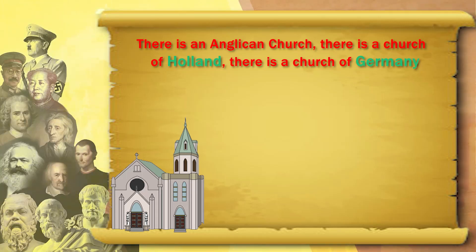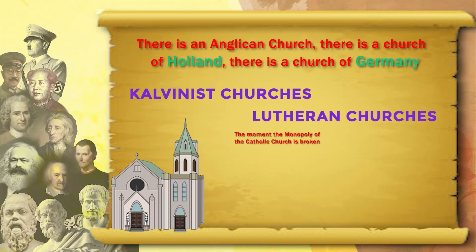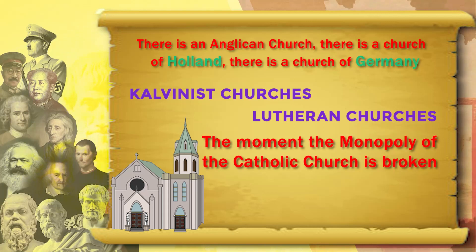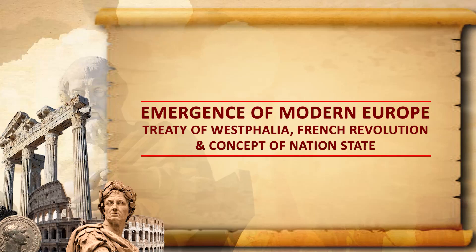Now there are many Protestant churches: the Church of Holland, the Church of Germany, Calvinist churches, Lutheran churches, and so many more. The moment the monopoly of the Catholic Church is broken, the kings find it very easy to become absolutist. In the 17th century, we find that different kings are following different churches — because Europe has yet not come out of the Abrahamic concept of the divinity of the king.